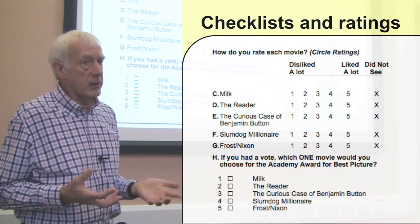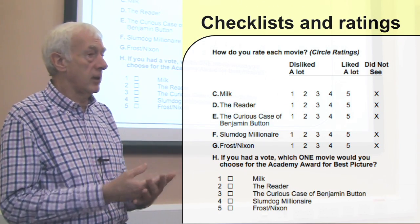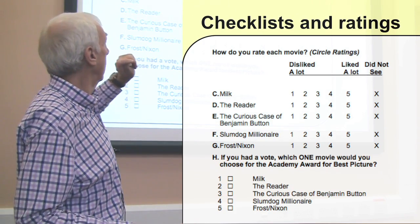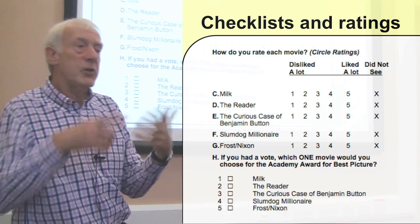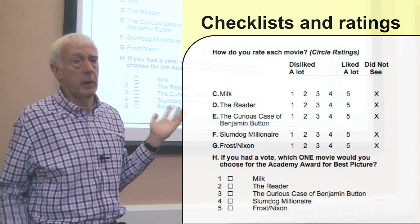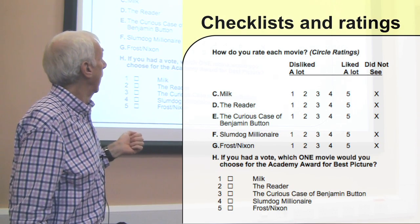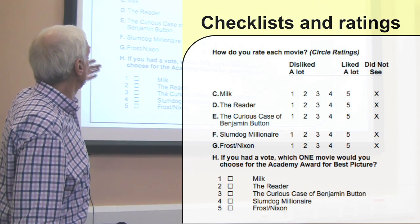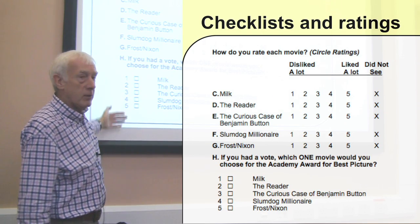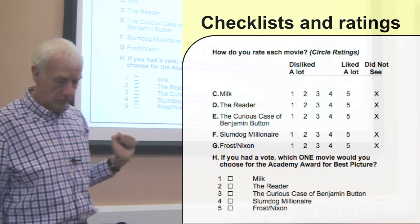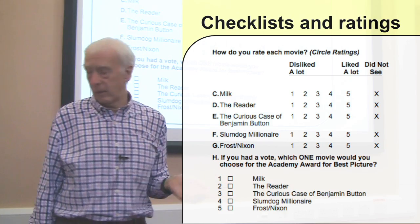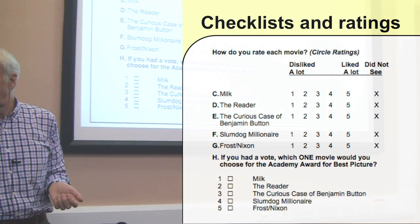If you really think people don't understand how to fill it in, then what you can do is provide an example beforehand. So it might say, if you think this film was one you liked a lot, then circle the five and actually show that happening just before the question itself. But I think most people are familiar how to do this now. And of course you circle X if you didn't see it. Then there's a subsidiary question: if you had one vote, like the Academy Award, which is the one you'd vote for — what's the best one for you? So that's a simple way of rating things, which is often a common feature of questionnaires.